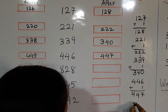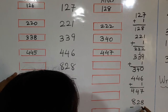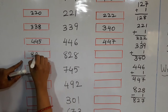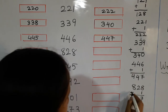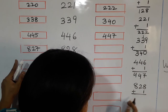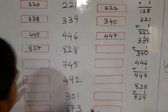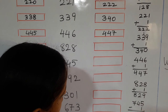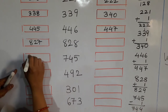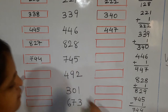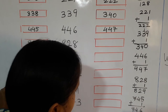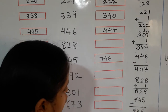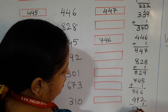Next, 828: minus 1 gives 827 as the before number. Again, if you know the numbers you can do it yourself, but if you don't know, subtract and add 1. See 745: minus 1 gives 744. And if I add 1, it gives 746. Next, 492: minus 1 gives 491.